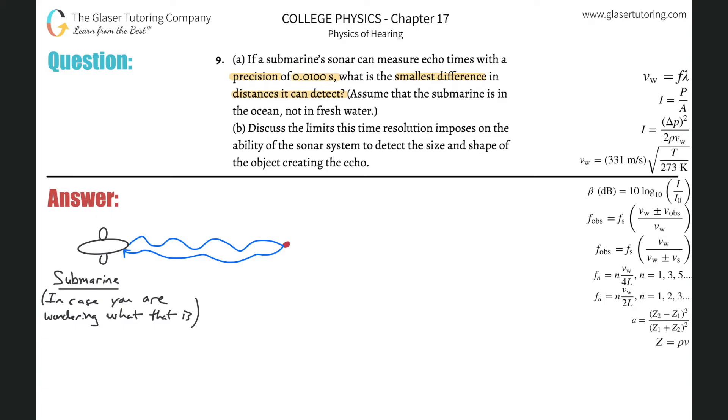So what that means is if you think about it, the faster the wave travels, the larger the variance becomes, or the larger the unknown distance, or the uncertainty in the distance.